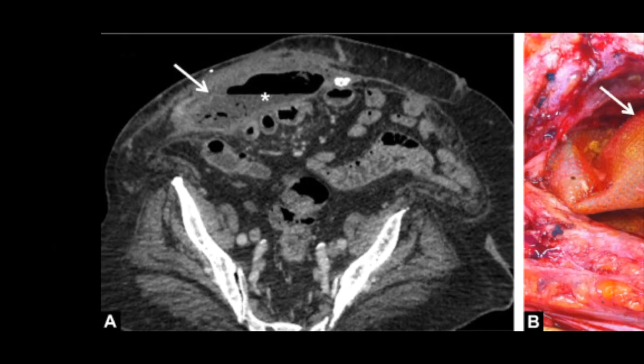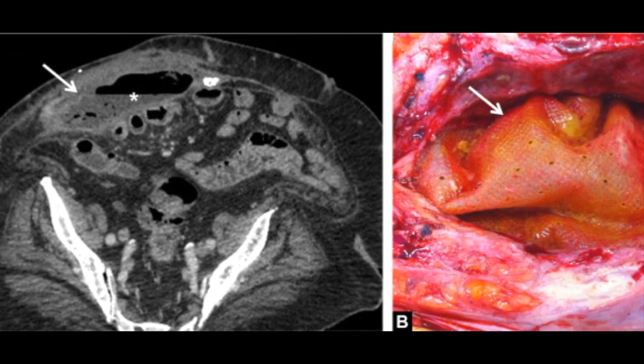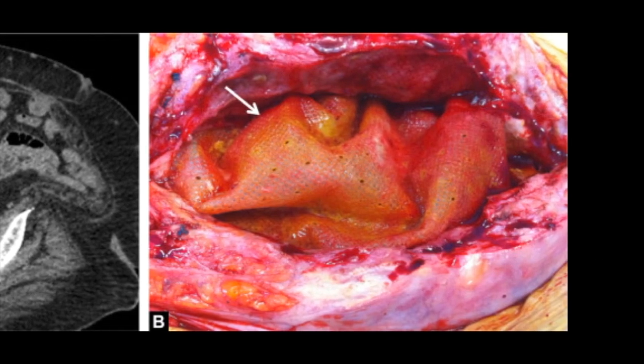Now let's see some complications. This is a post-operative abscess in a patient with septic shock and abdominal pain many months after surgical mesh placement. The image shows a fluid collection in the anterior abdominal wall with a mesh floating inside, indicated by the arrow. Intraoperative images show the mesh in the abscess.